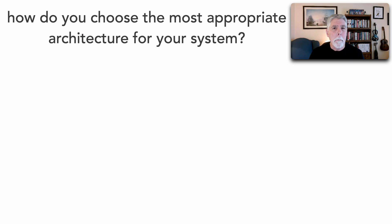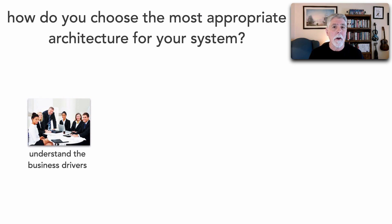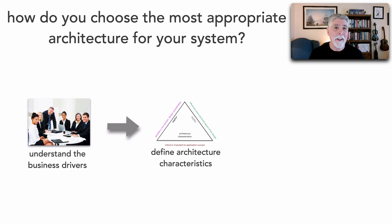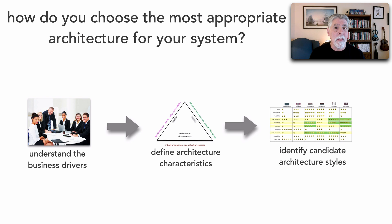The three basic steps for selecting and choosing the right architecture are: first, understanding the core business drivers and needs — what does that system have to support from a business perspective? We translate those business needs into architectural characteristics, those things that some people call non-functional requirements. And from there, utilizing those, we look for an architecture that matches those architectural characteristics.